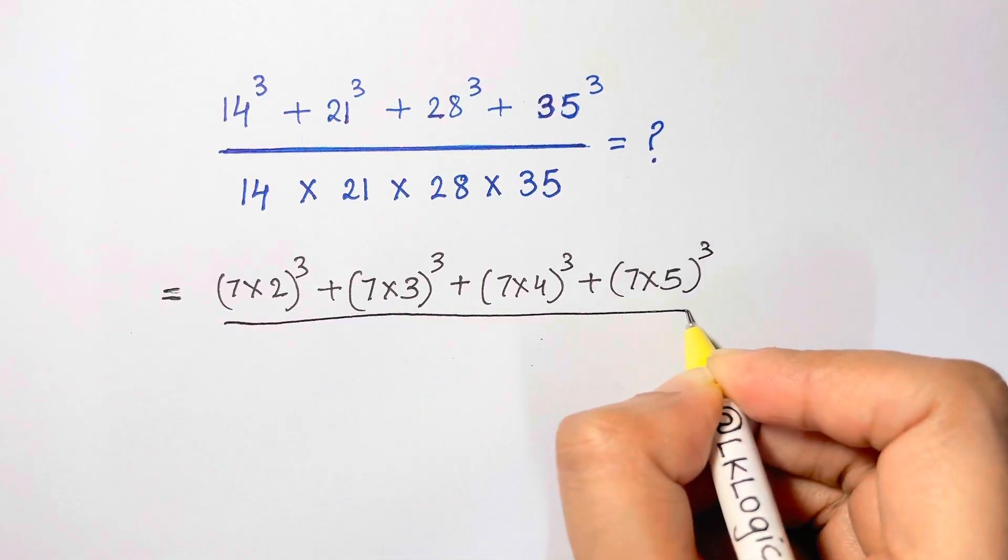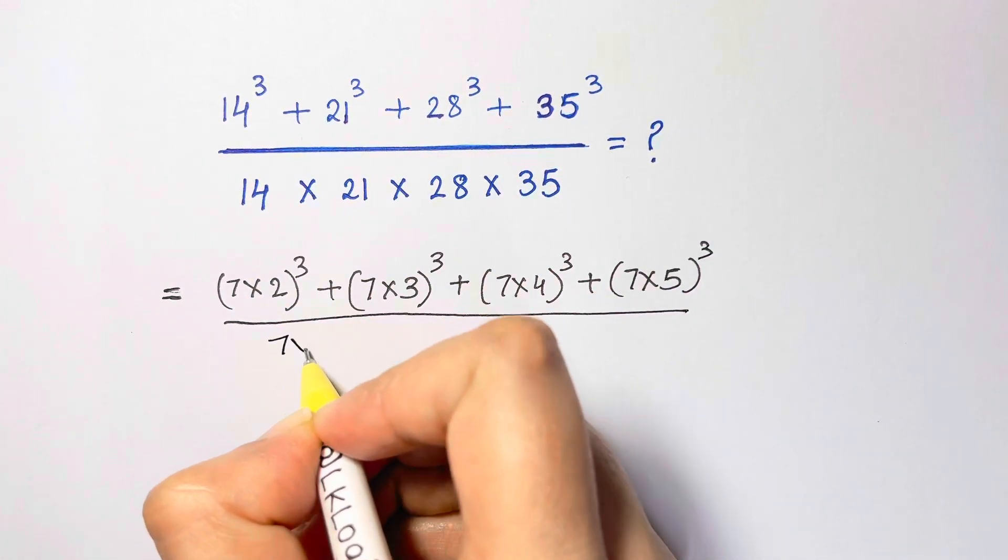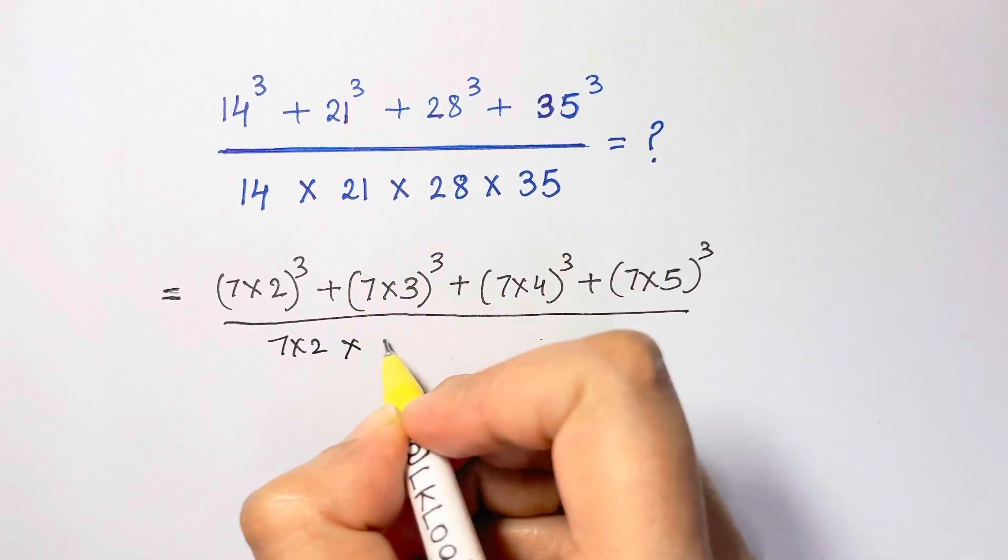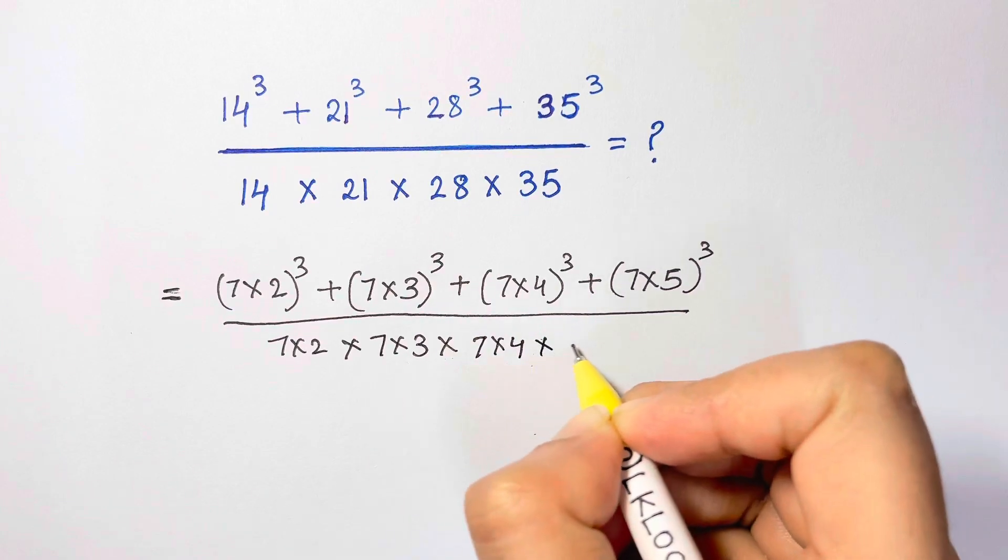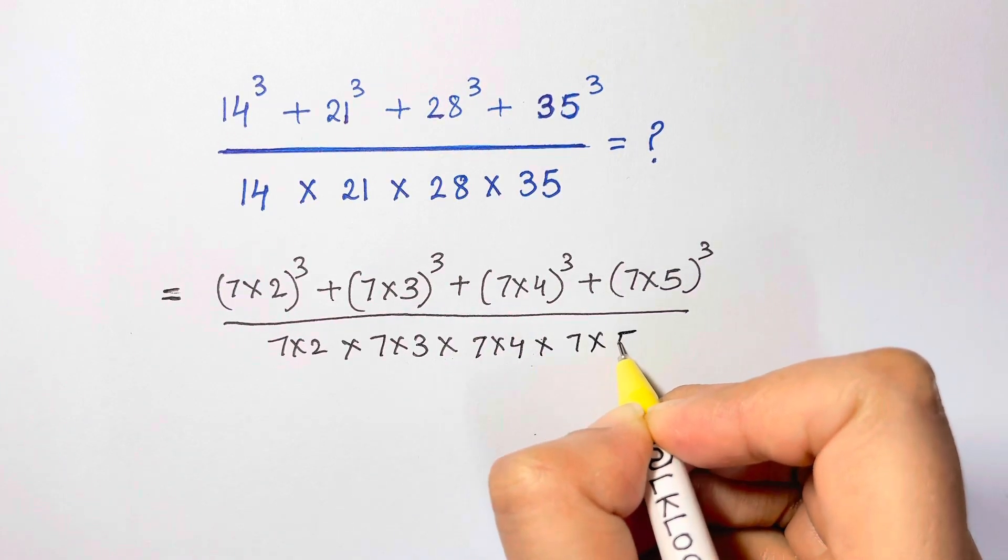Over, we have 7 times 2, 21 is 7 times 3, 28 is 7 times 4, and 35 is 7 times 5.